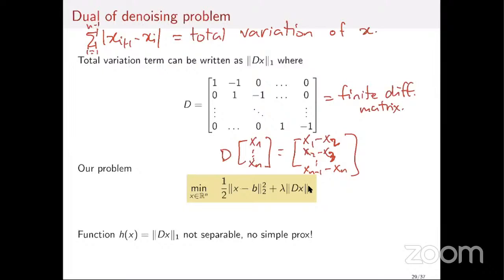Unlike the LASSO problem from this morning — where I minimize a squared loss plus an L1 norm of x and can use the proximal gradient method — in this case I have Dx inside the L1 norm. The problem doesn't become separable anymore; the components of x are coupled together, so the prox function of this regularization term has no simple closed form. We need to find an alternative way to solve this optimization problem.